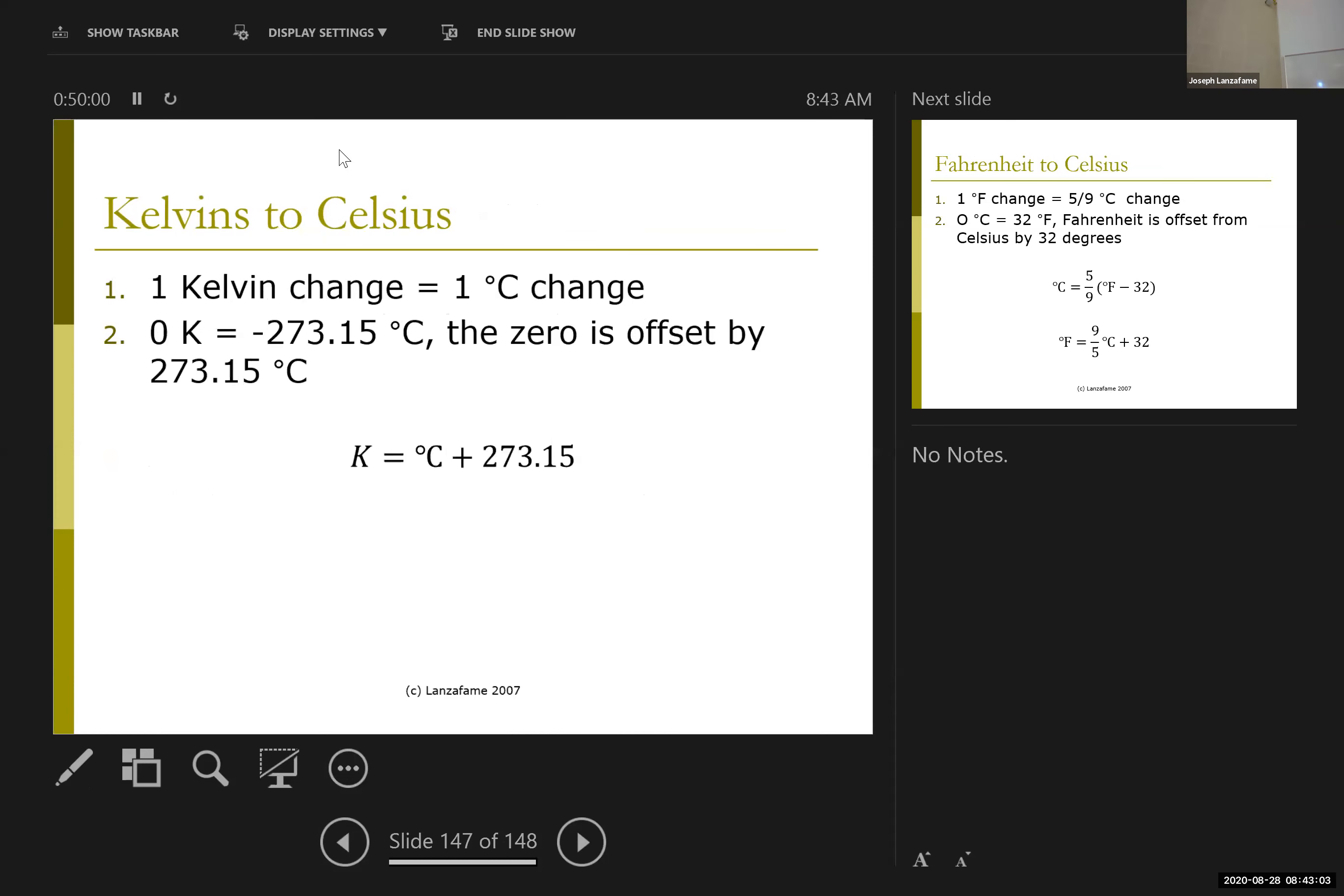And the other thing that tends to be different in different temperature scales is where the zero is. And so if I want to adjust from one scale to the other, I need to recalibrate the size of a degree and move the zero. And so in the case of Kelvins to Celsius, turns out that one Kelvin degree is the same size as one Celsius degree. So I don't need to recalibrate the size. But I do need to move the zero.